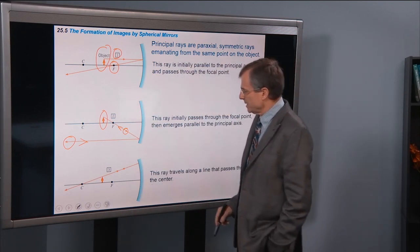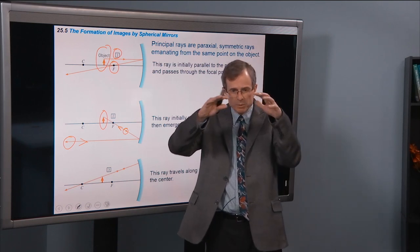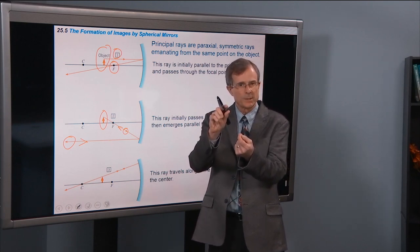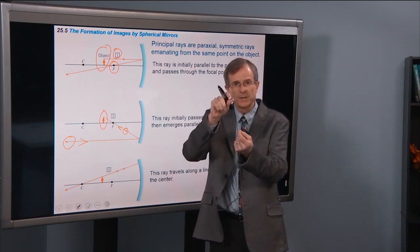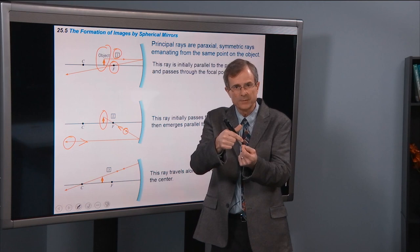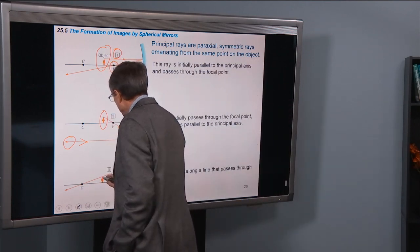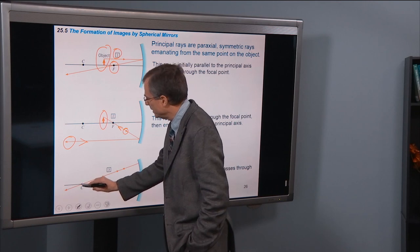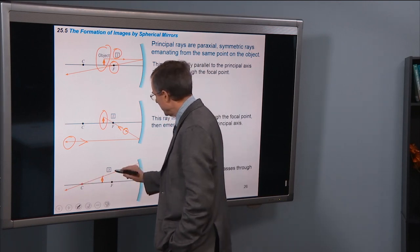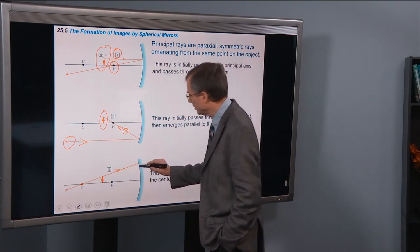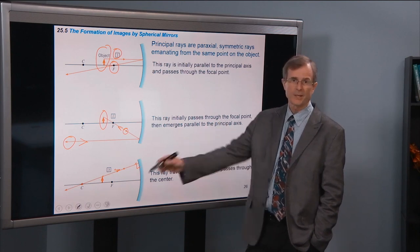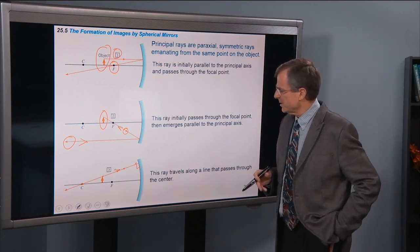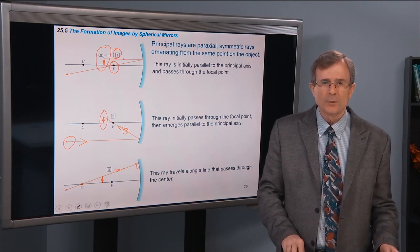The third principal ray takes advantage of the fact that this mirror was cut from a sphere. Any line from the center of a sphere out to its surface will be perpendicular to the surface at that point and reflect back on itself. So a ray that leaves the tip of the object and heads along the line between the center of curvature and the tip will hit the mirror, be perpendicular to it at that point, reflect right back on itself, and come back through the center of curvature. Those are the three principal rays — very helpful in locating images.